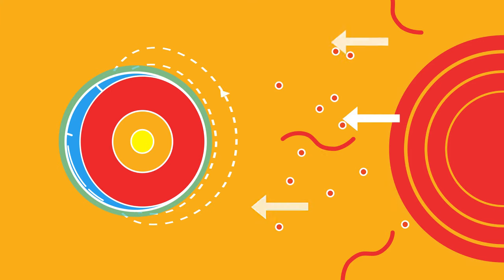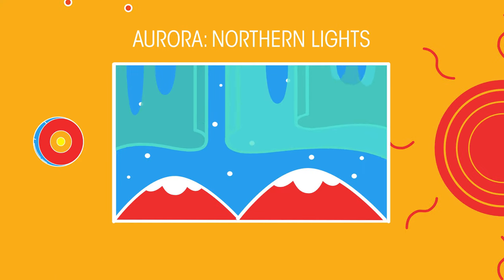The Earth's magnetism usually protects the surface of the Earth from these particles, but if some managed to get through, then we could see the aurora, also known as the Northern Lights.